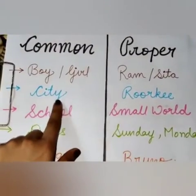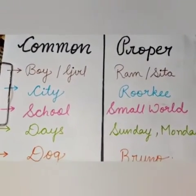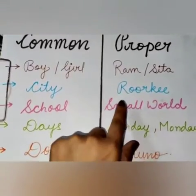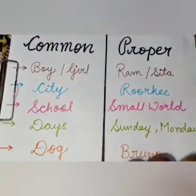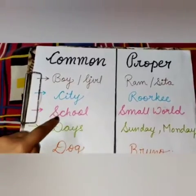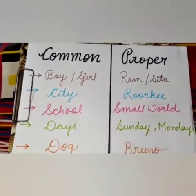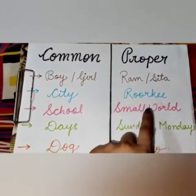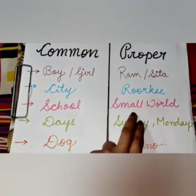Similarly, when I talk about city — city is a common noun because I have not mentioned the name of a particular city. But when I say Rootki, Rootki is a particular name of a city, so Rootki is considered a proper noun. Next is school — school is just a common noun because I haven't mentioned the name of a particular school. But Small World Junior High School is a particular name of a school, so it will be considered as a proper noun.